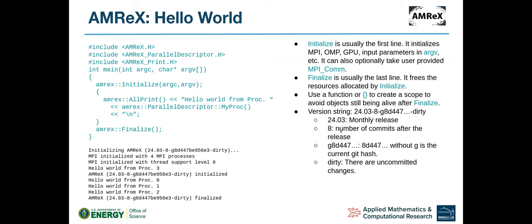The number of commits after the release is shown, and it also has a git hash. In this case, AD447 is the current git hash of the code. If the code has been modified, it shows the word 'dirty'.